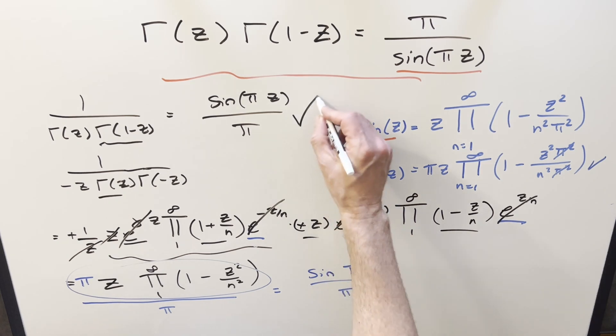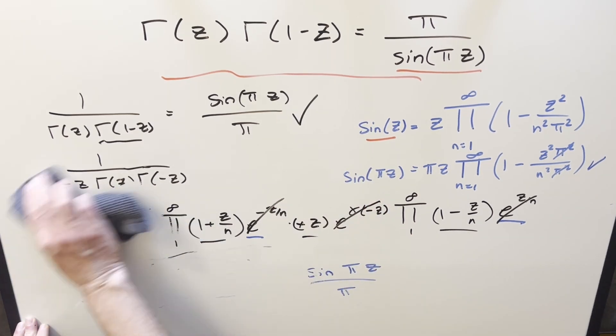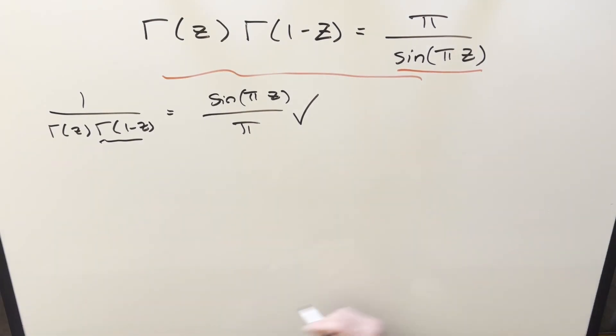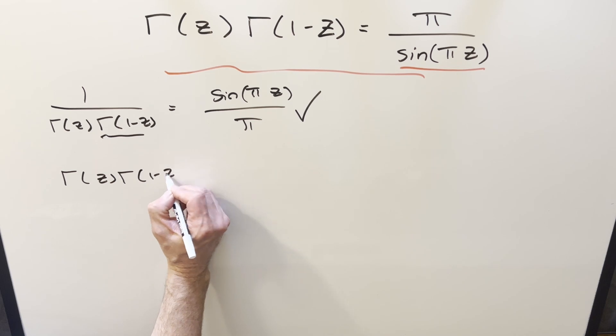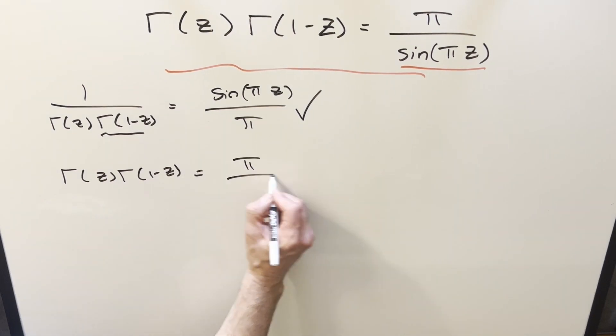And so we've shown this thing right here is true. All we need to do is just make a little bit of space. And so then we can just flip it. So we have our formula gamma of z times gamma 1 minus z is going to be pi over sine pi of z.